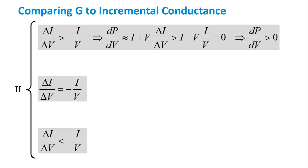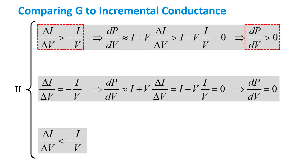In the first case, if the incremental conductance is greater than the negative instantaneous conductance, this means that dP/dV is greater than zero. We get there by starting with dP/dV = I + V·(ΔI/ΔV), and knowing that the incremental conductance is greater than the negative instantaneous conductance. This means we are on the left of the maximum power point, so we should increase the voltage. In the second case, if the incremental conductance equals the negative instantaneous conductance, then dP/dV equals zero, meaning we are at the maximum power point.